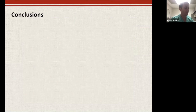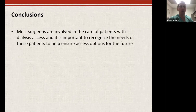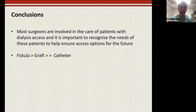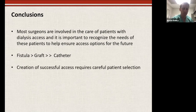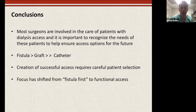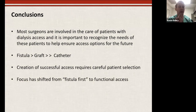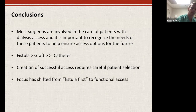In conclusion: most surgeons are involved in the care of patients with dialysis access, and it's important to recognize the needs of these patients and ensure access options for the future. Fistula is better than a graft, and both are much better than a catheter — let's do what we can to keep these catheters out of these patients. There's a lot of careful consideration going into deciding what patients get and the order in which they get it to prolong their access. There's been a shift in the past five years away from fistula first toward functional access first.